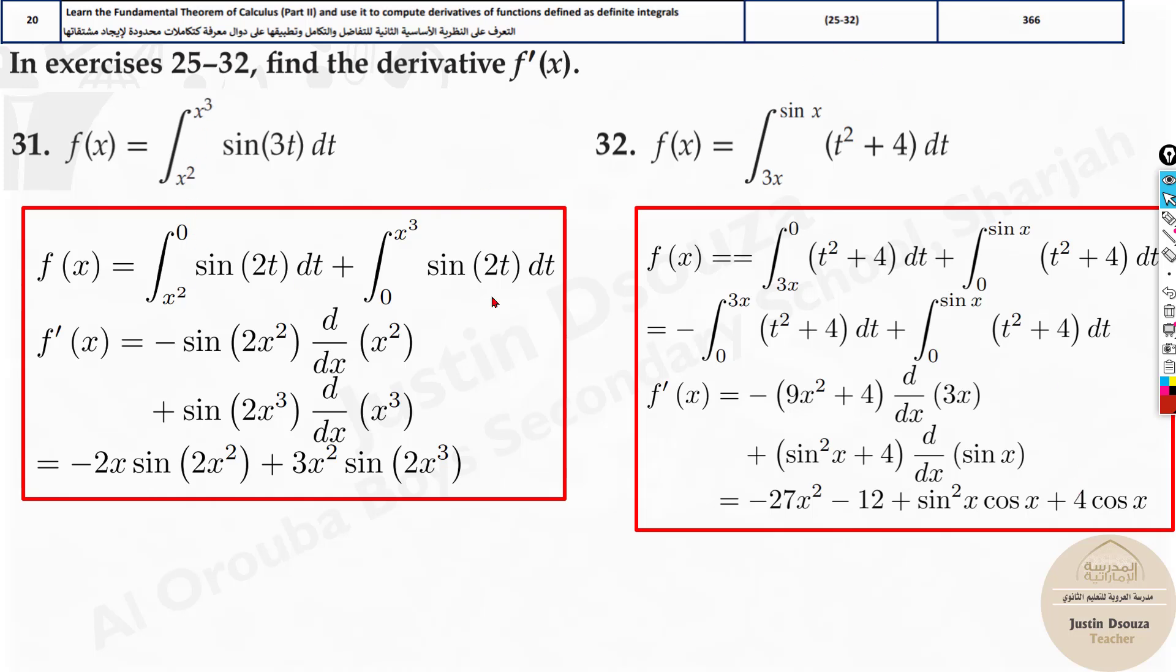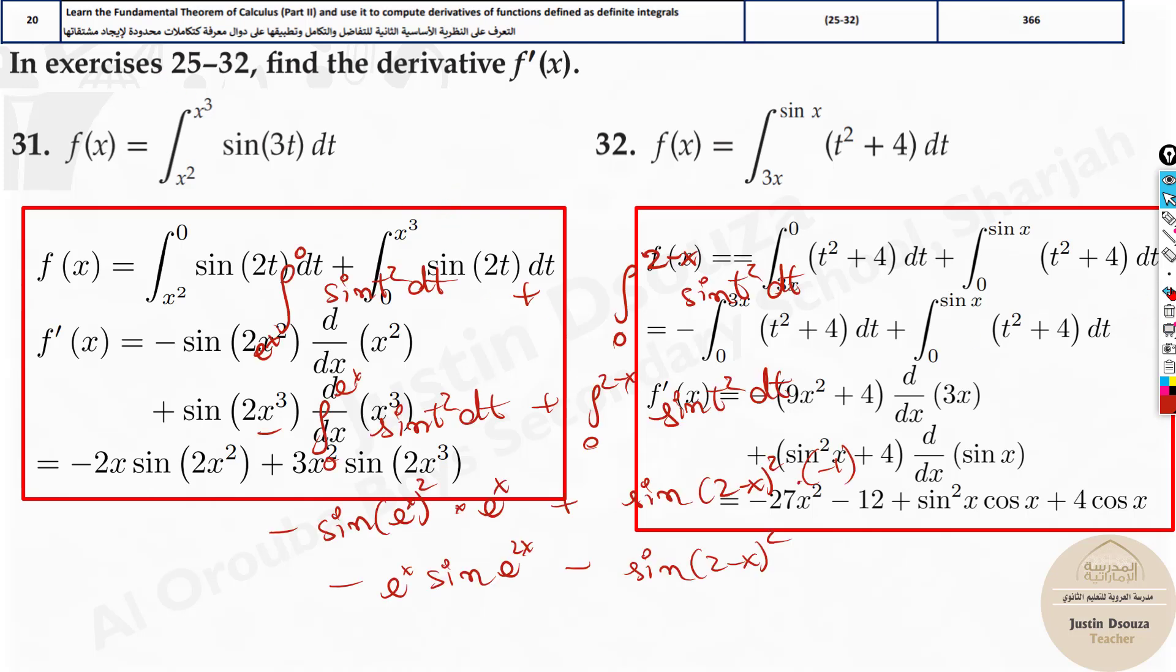When you have two functions up and down, first split it out and then swap this up. Take this x square up. 0 goes down and it becomes minus. See the minus sign. And over here, what happened? It became, instead of t, it became x square and then you need to derive this. Okay? Over here, they have written d by dx. I was writing it directly with derivation. I reduced the steps.